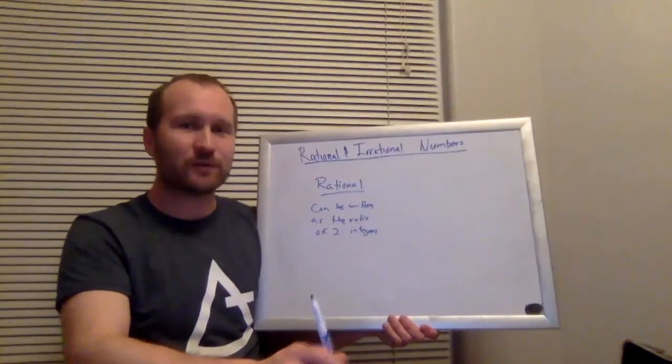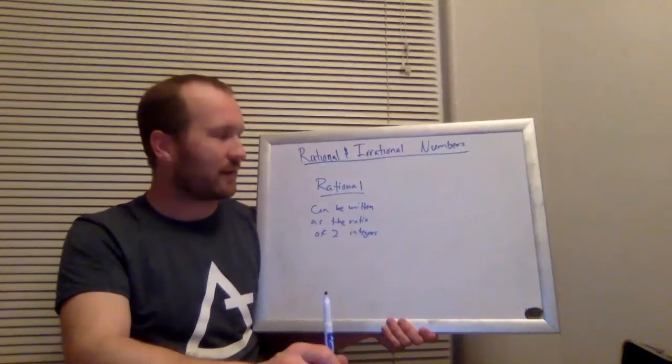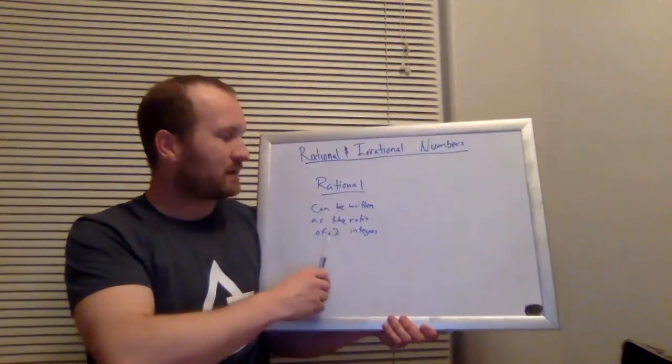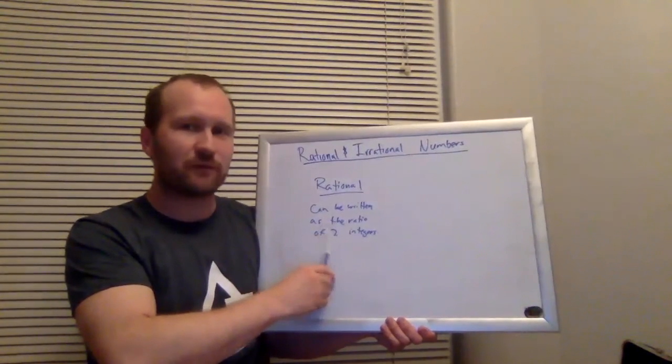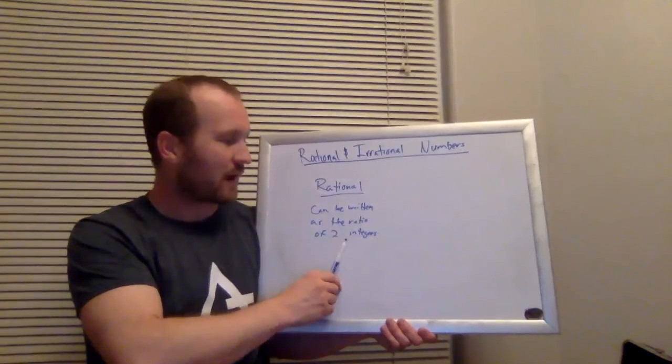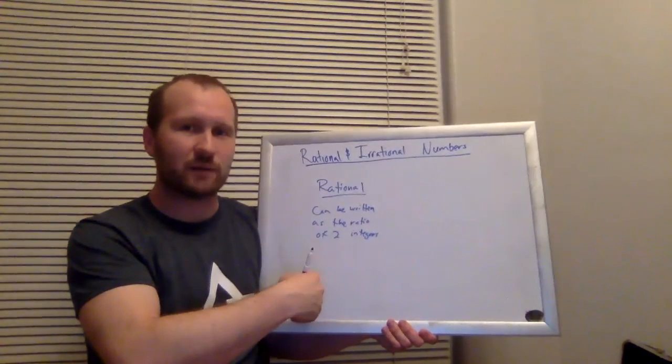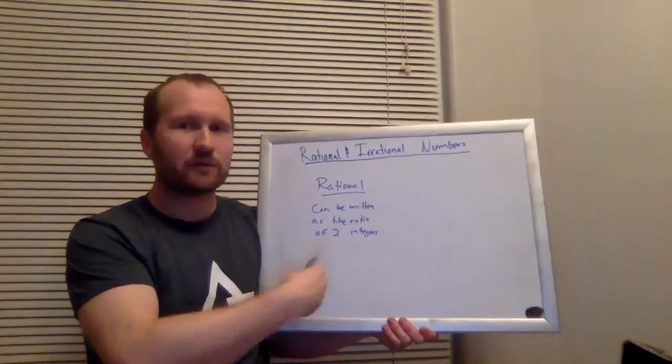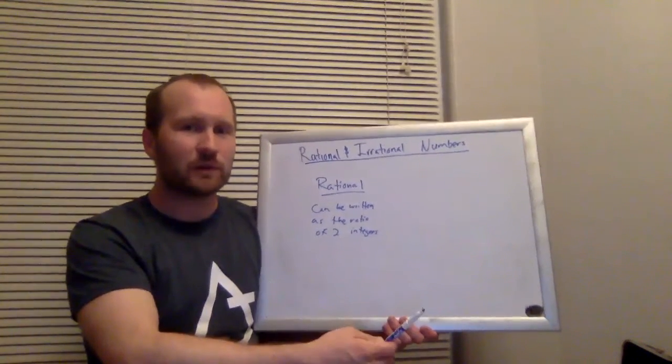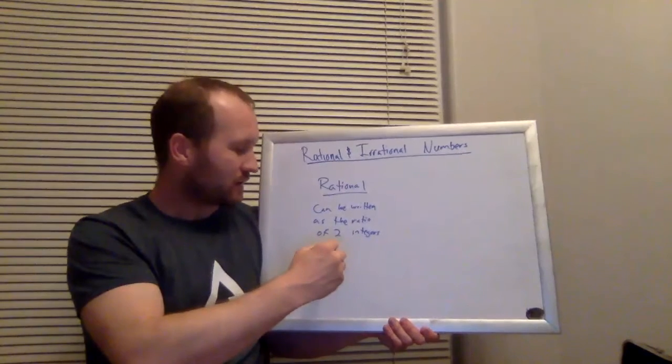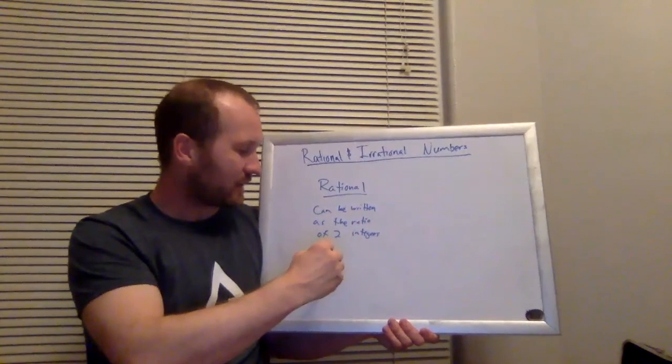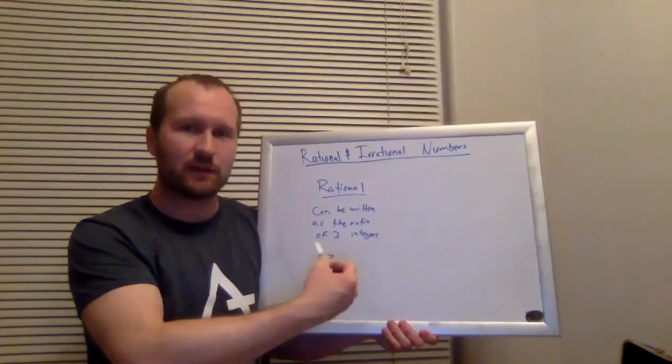And again, I don't want to get too much into the technicalities of all of that today, although it's really cool and involves infinity and that sort of thing. But if we just think of numbers as fractions, rational numbers as fractions, that's a pretty good guideline for understanding what rational numbers are. You have to remember that every whole number is also a fraction. So something like 17 is a fraction, 17 over 1.